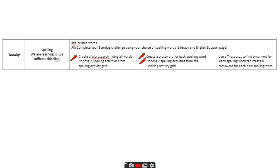So where are you going today? Your -ible or -able words are on the Literacy and English page, the support page, and you can choose which chili you would like.